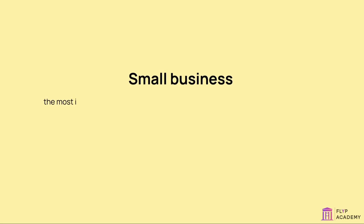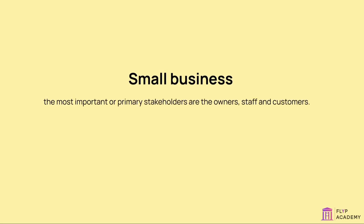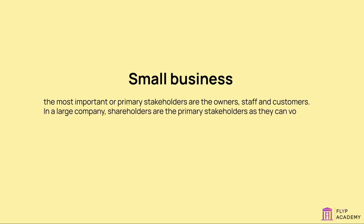In a small business, the most important or primary stakeholders are the owners, staff, and customers. In a large company, shareholders are the primary stakeholders as they can vote out directors if they believe they are running the business badly.